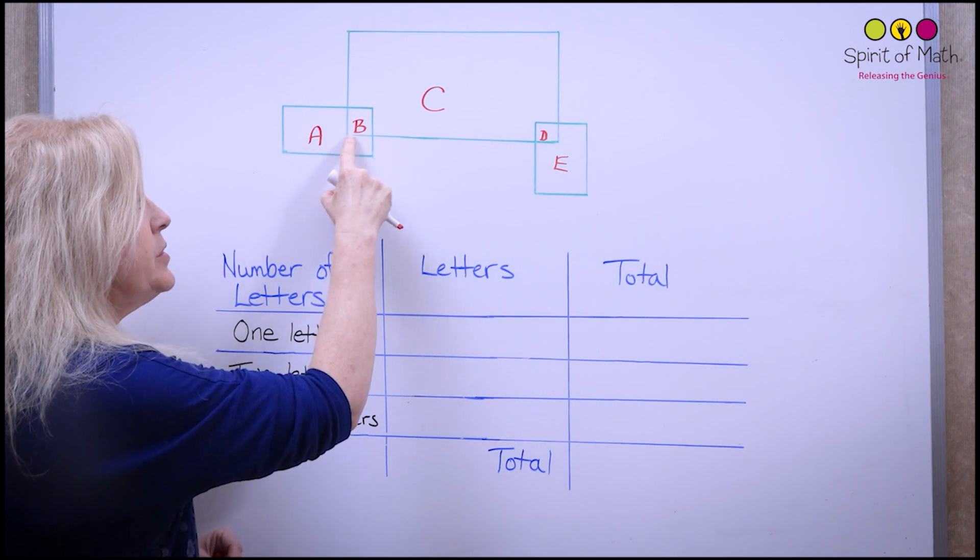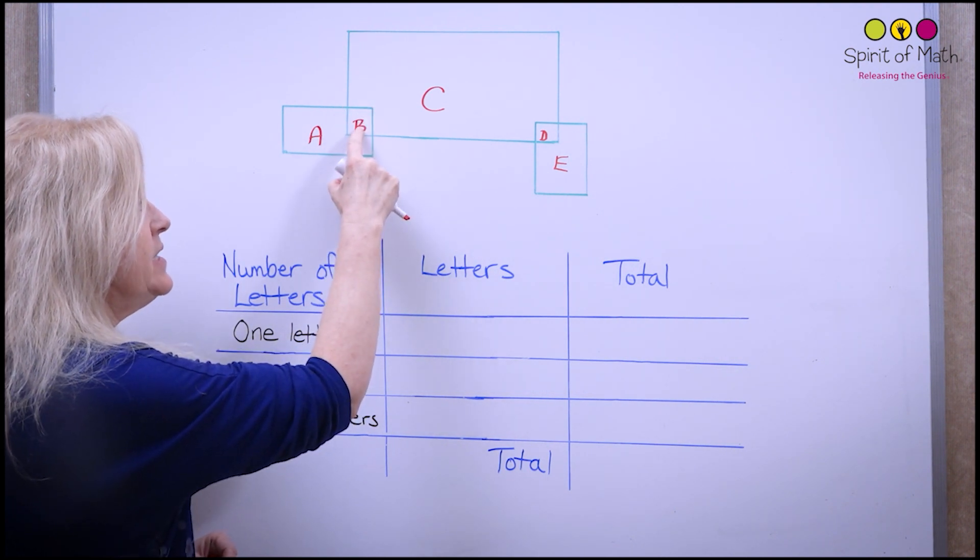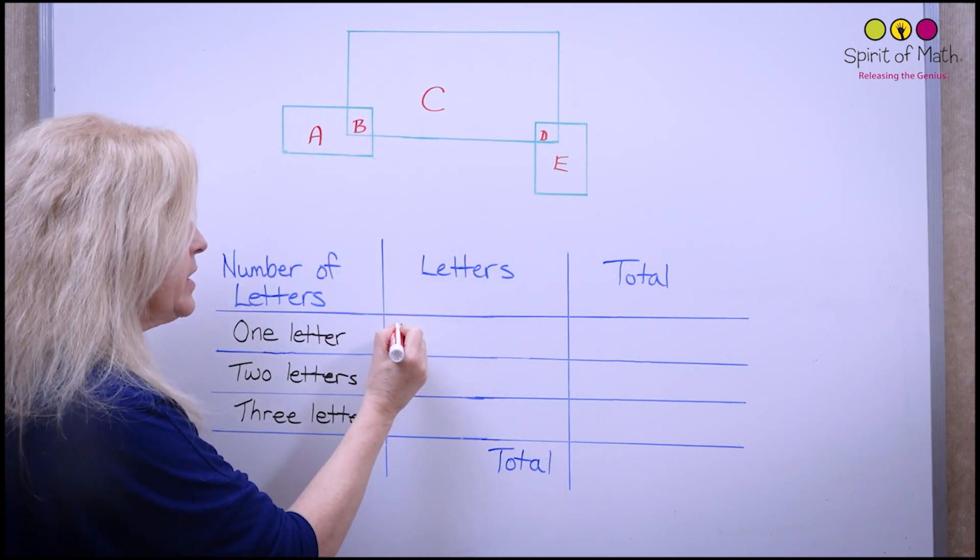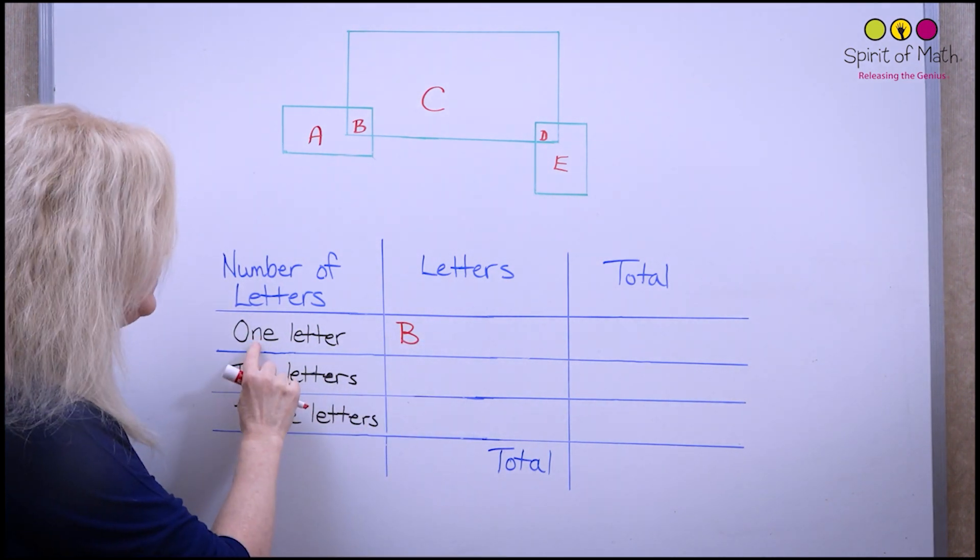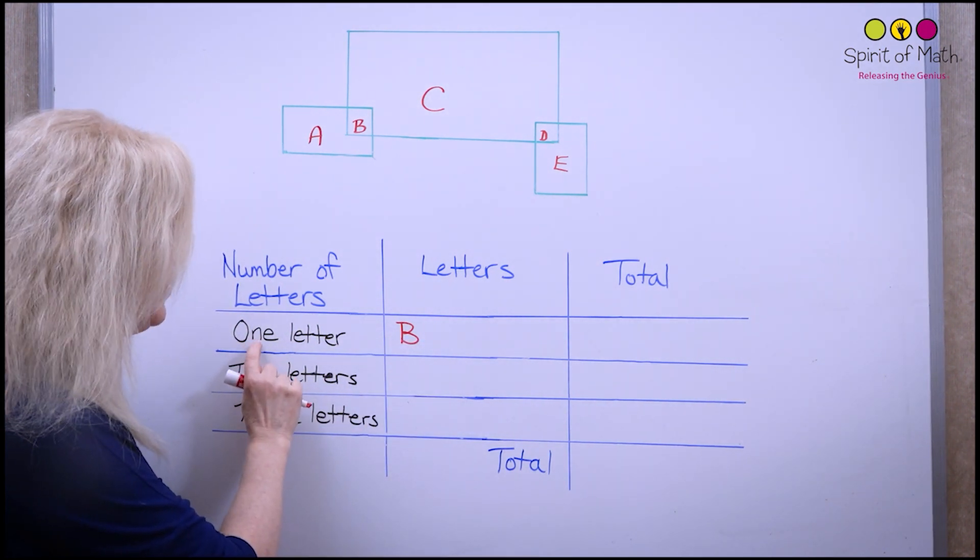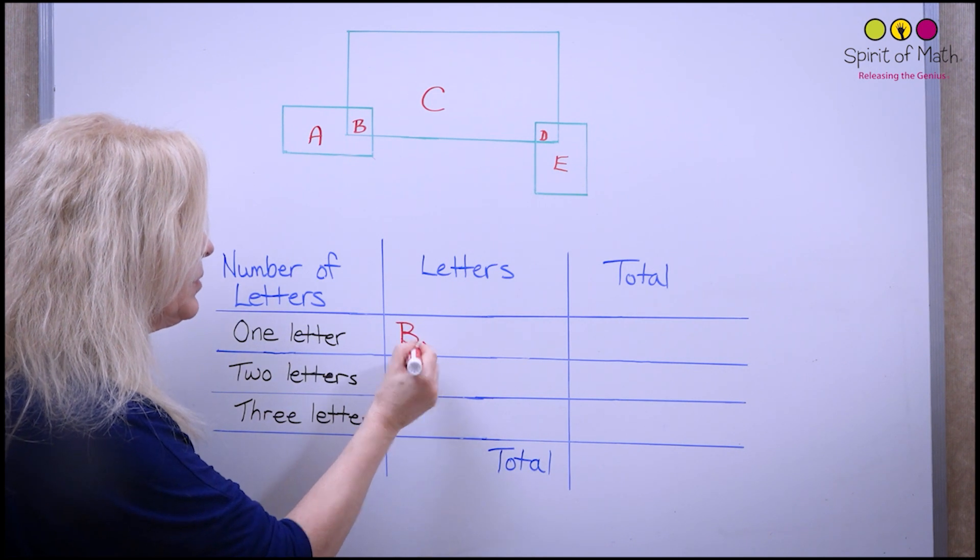B, is it a rectangle? One, two, three, four? Yes, it is. So B is a rectangle. So we put a B down there beside one letter. So we've got B and I'll put a comma.